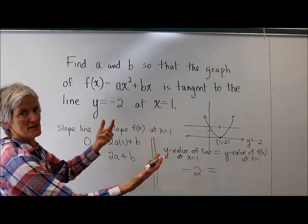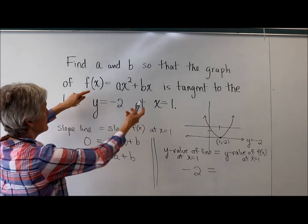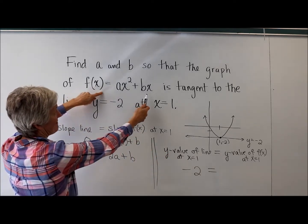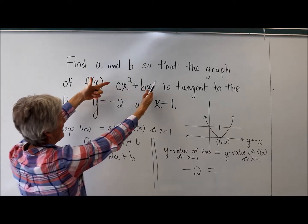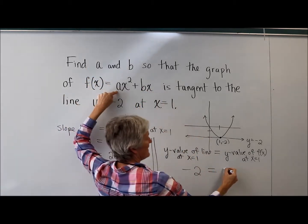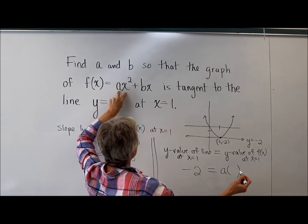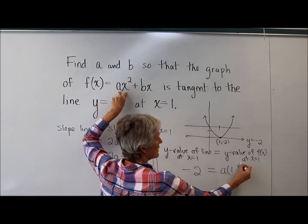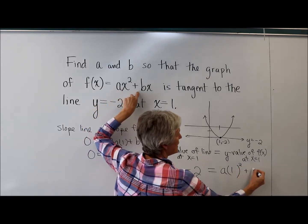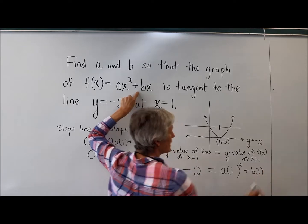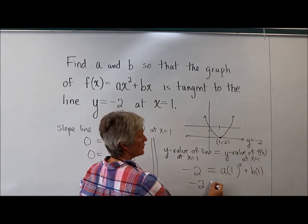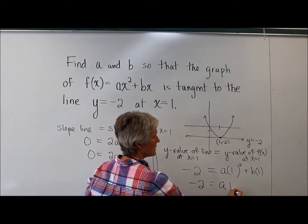Well, any ideas? Well, the y value is what the value you get when you plug in an x. Yeah. So it's ax squared, I'm going to plug in a 1, plus bx, x is 1. So I have negative 2 equals a plus b.